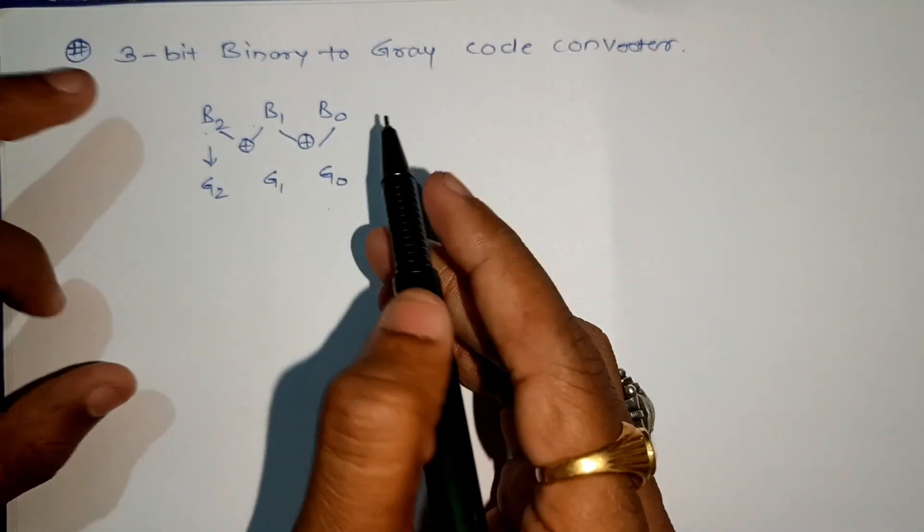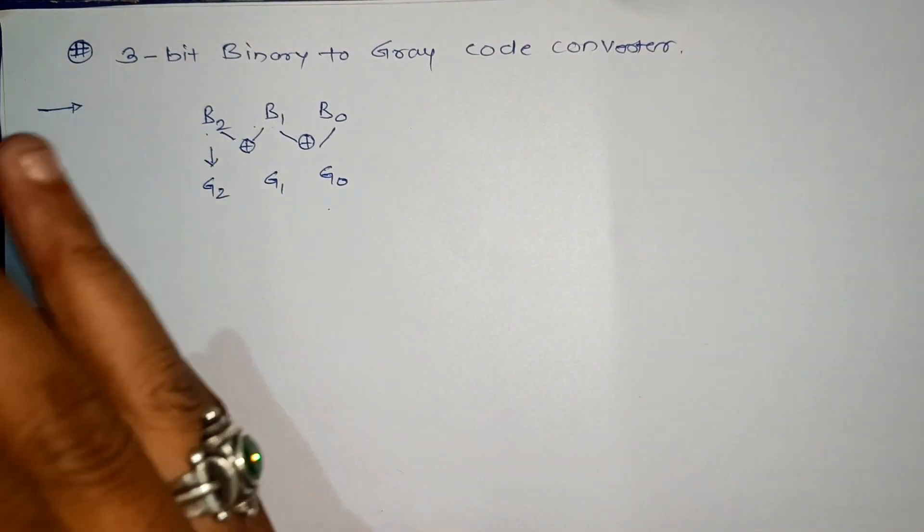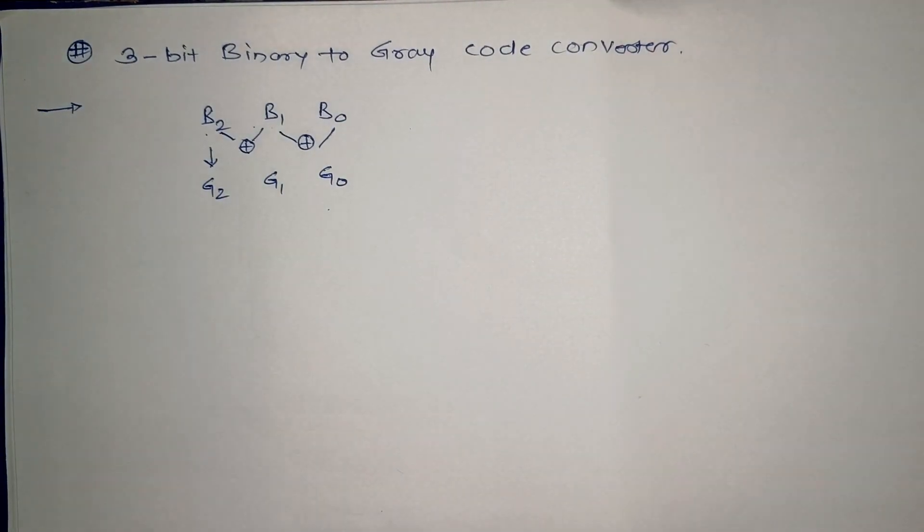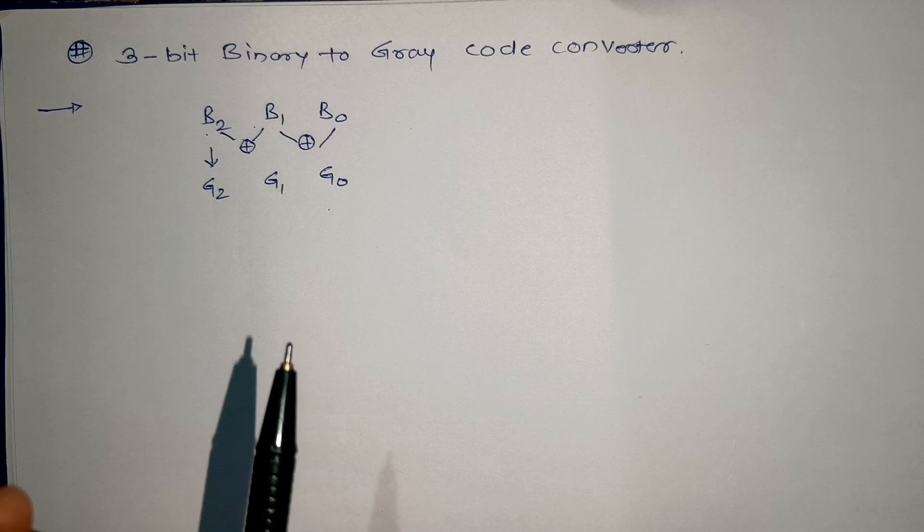Now I will follow these steps to design a 3-bit binary to gray code converter. As usual, we follow three steps: truth table, logic expression, and logic diagram.